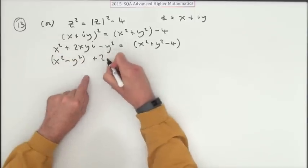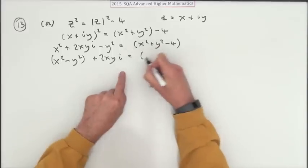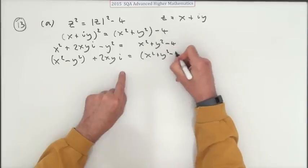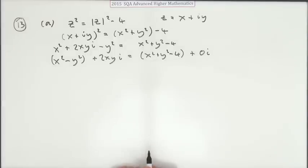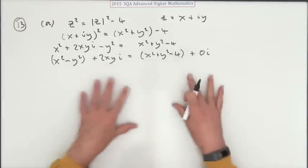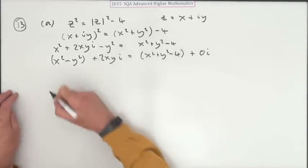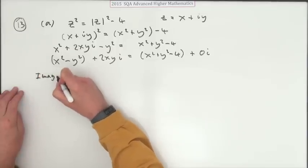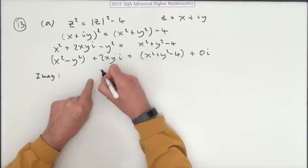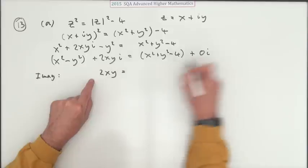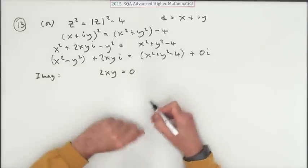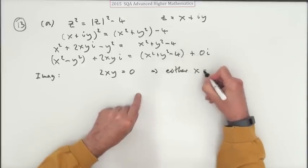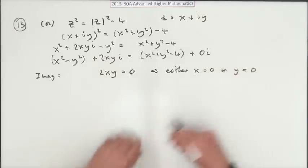I'll not finish this off anyway. x² - y² is the real part and 2xy is the imaginary part. Now I'll do this. x² + y² - 4 is the real part and there's no imaginary part. So now you equate the real and imaginary parts. Do the imaginary parts first. Right, imaginary parts: that means that 2xy should equal 0. Now straight away that tells you that either x = 0 or y = 0.